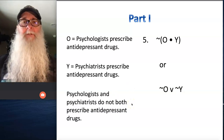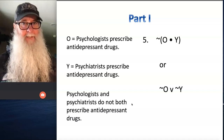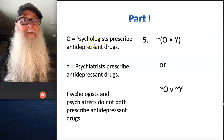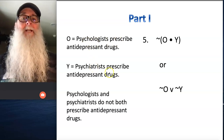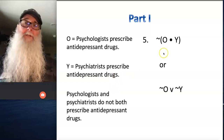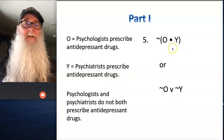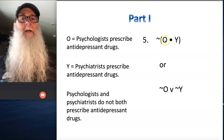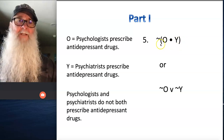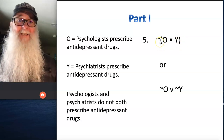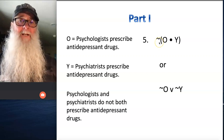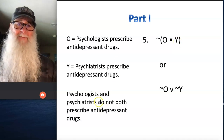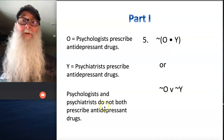Number five, we have two statements smashed together here, making this look like a simple statement, but it's actually a compound statement made up of 'psychologists prescribe antidepressant drugs' and 'psychiatrists prescribe antidepressant drugs.' We're going to translate this in one of two ways. We could translate it with a dot, and if we do that, we're going to say tilde, parentheses, O dot Y, and we would read this as: it is not the case that both psychologists prescribe antidepressant drugs and psychiatrists prescribe antidepressant drugs. They don't both prescribe them.